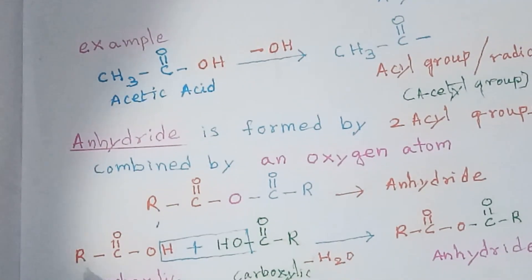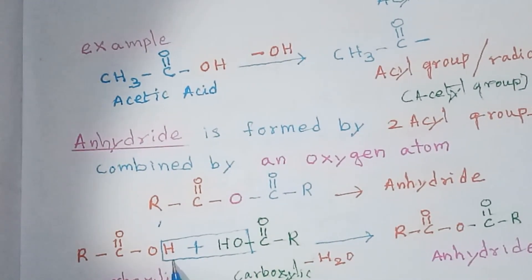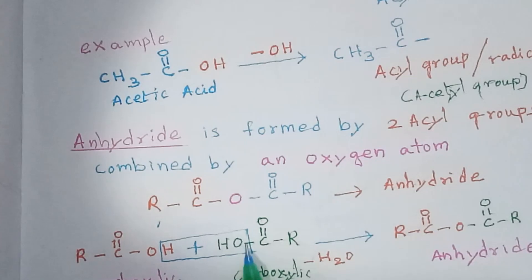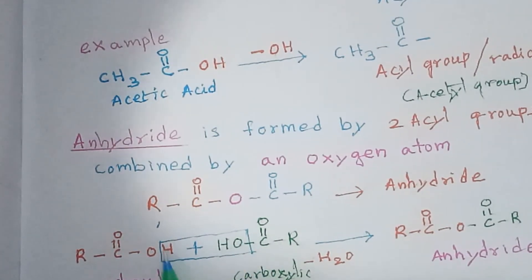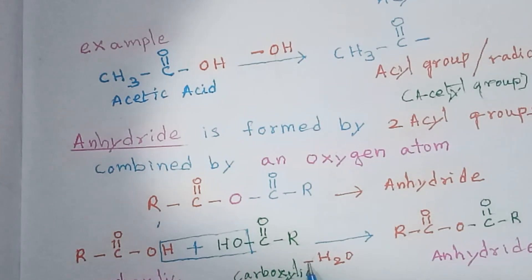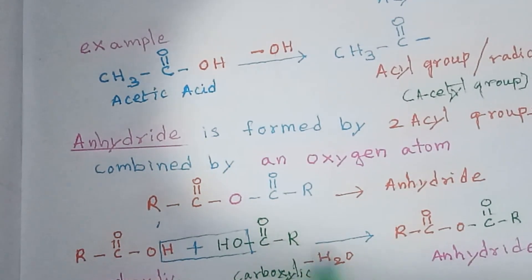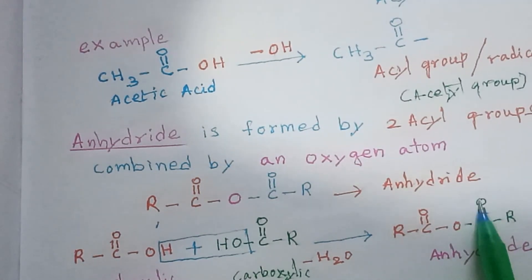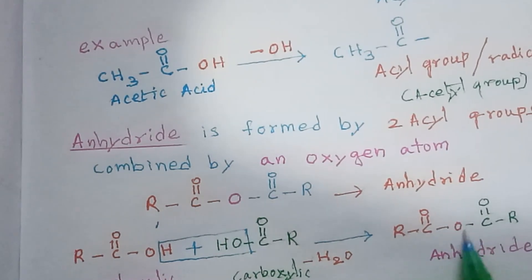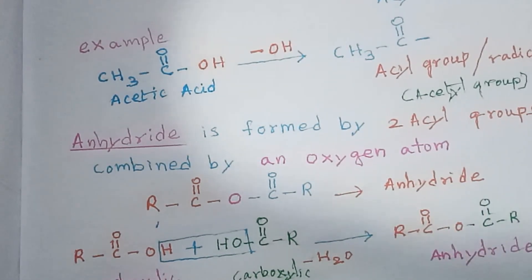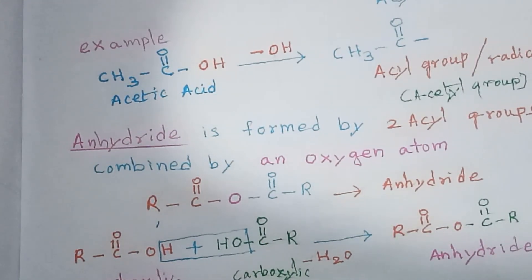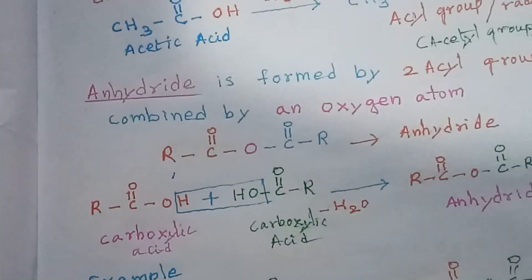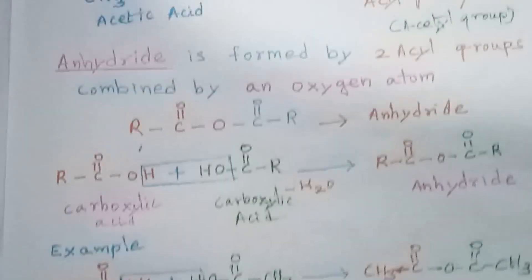If we take two carboxylic acids — R-C double bond O-OH and R-C double bond O-OH — and remove a water molecule (H2O), we get R-C double bond O — O — C double bond O-R with an oxygen atom in the middle. This is an anhydride.